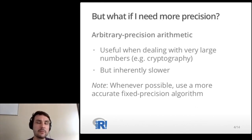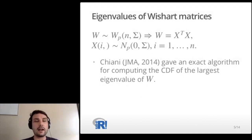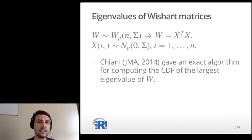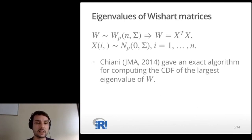Many people have written about tricks for developing more accurate algorithms, so I won't go into this. The example where I've encountered the need for arbitrary precision is when looking at the distribution of the largest eigenvalue of Wishart matrices. A Wishart matrix W follows a Wishart distribution in p dimensions, degrees of freedom equal to n, and covariance matrix equal to sigma, if we can write W as X-transpose times X, where X is an n by p matrix and each row of X follows a multivariate normal in p dimensions with mean zero and covariance sigma. This is a very famous distribution in multivariate analysis because it's related to covariance matrices. Knowing the distribution of the eigenvalues is of importance in some applications.